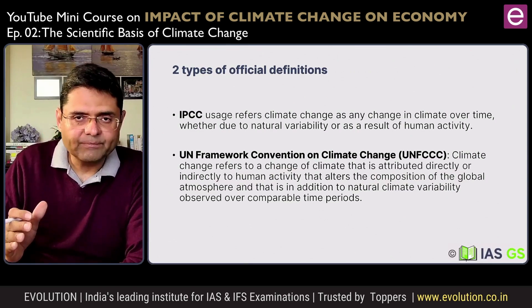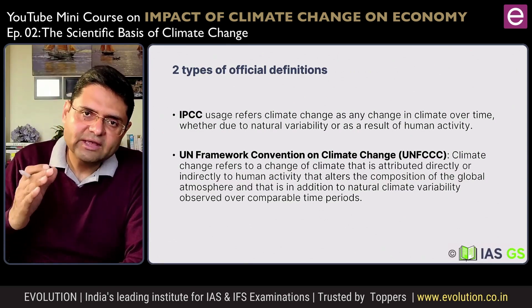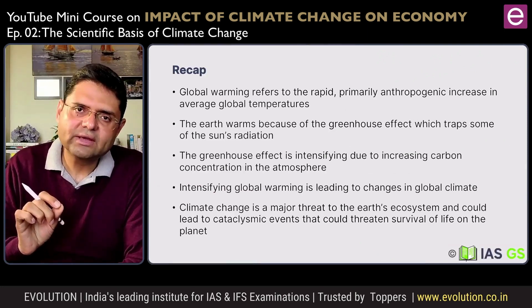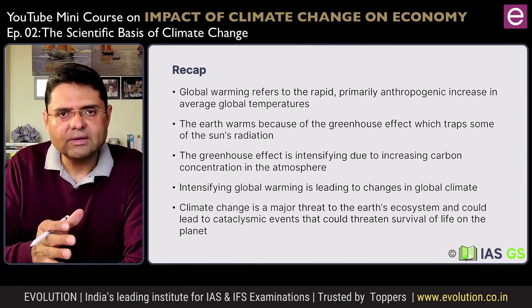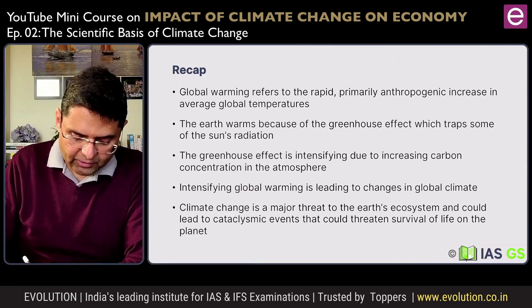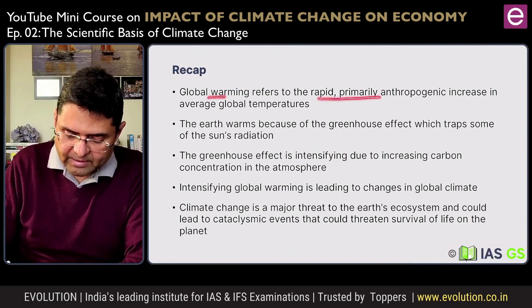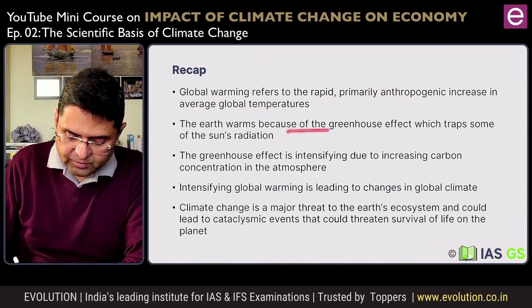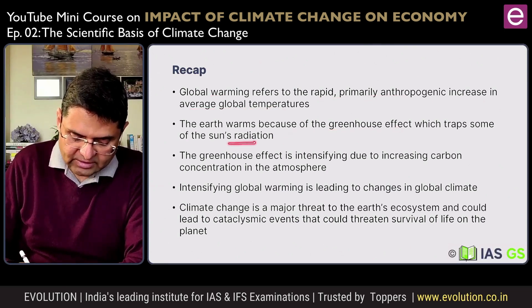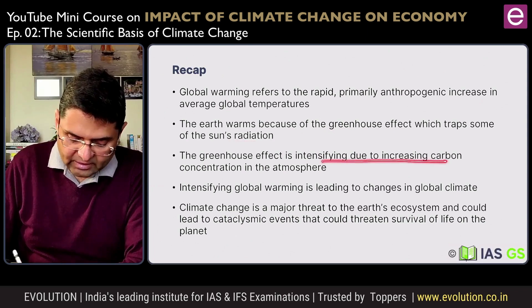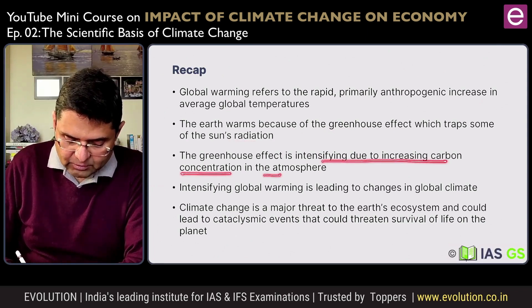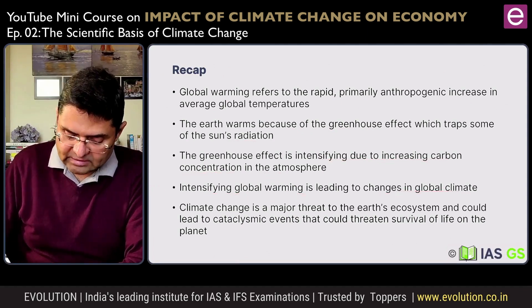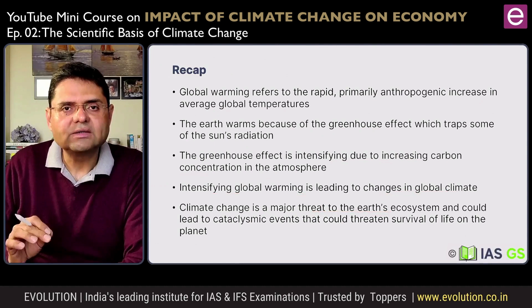Climate change is happening. To recap all that we have learnt in this video: global warming is a rapid, primarily anthropogenic increase in average global temperature. The earth warms because of the greenhouse effect, which traps some of the sun's radiation. It is intensifying because of increasing carbon concentration in the atmosphere. Intensifying global warming is leading to changes in global climate, and it is a major threat to earth's ecosystems.